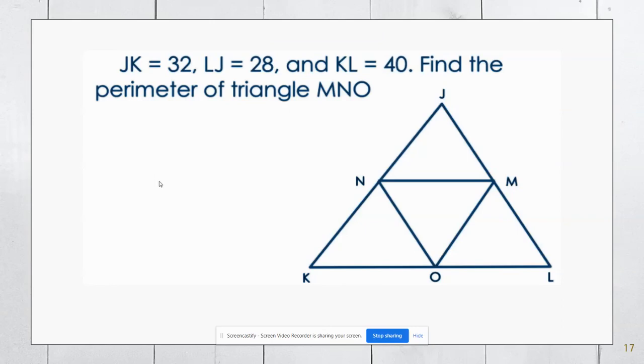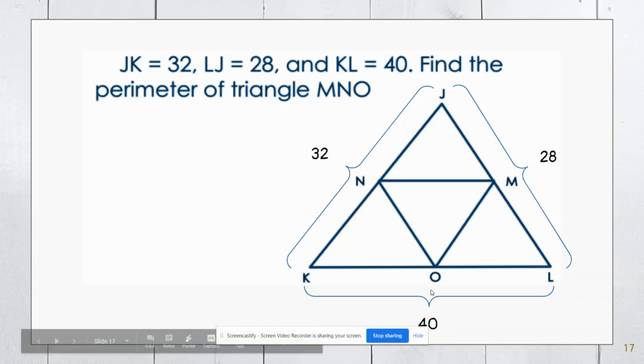Our last example here, very similar to the last one, except I've been given the outside lengths. Since they want me to find the perimeter of triangle MNO, we are assuming in this case, since I apparently forgot to type it in, that M, N, and O are midpoints. This is another one we could do two different ways. I know that the exterior perimeter is double the interior because of the mid-segment theorem. But I can also use the mid-segment theorem, just like we did before, except I'm not doubling this outside length. I'm dividing it by two to get MN being 20.